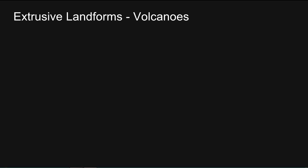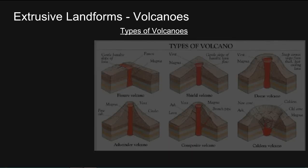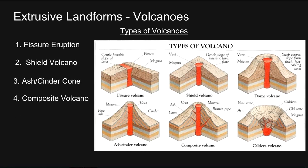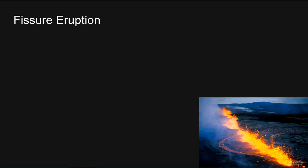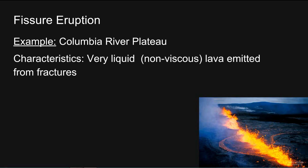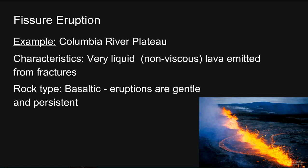Extrusive landforms — volcanoes. Types of volcanoes: fissure eruption, shield volcano, ash or cinder cone volcano, composite volcano, volcanic dome, and caldera. Fissure eruption: an example is the Columbia River Plateau. Characteristics include very liquid, non-viscous lava emitted from fractures. Rock type is basaltic. Eruptions are gentle and persistent.